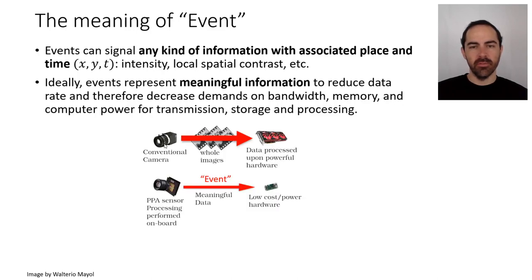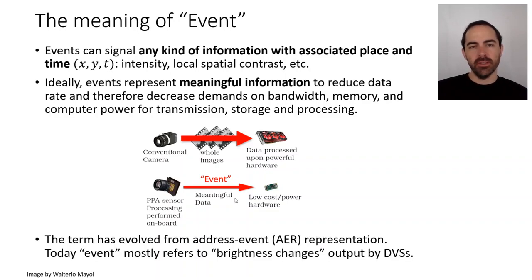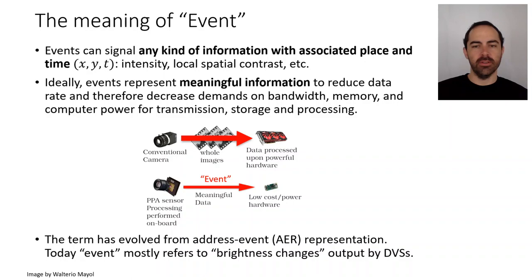The idea is to have more complex or smart pixels near the image plane that do some processing already there, like the DVS does — differentiating intensity and only transmitting the non-redundant data. The term event has evolved from Address Event Representation (AER), a protocol invented for these sensors. Today, event mostly refers to only the brightness changes output by the DVS, but more broadly it could mean any type of meaningful data transmitted from the sensor.